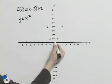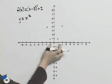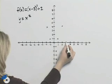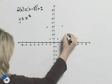So basically if I know the points on y = x², I can shift all of these points 3 units to the right and 2 units up.